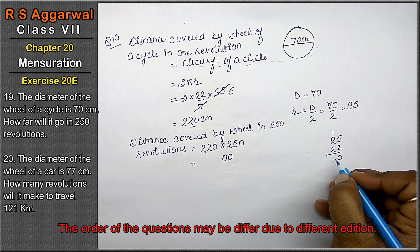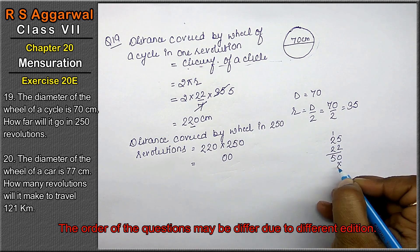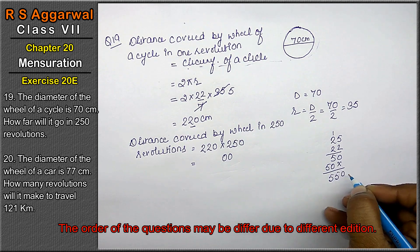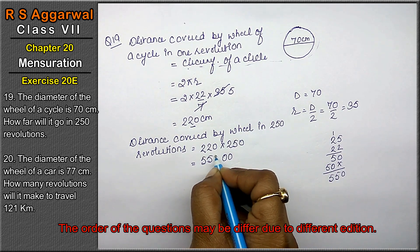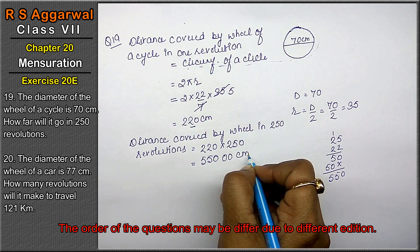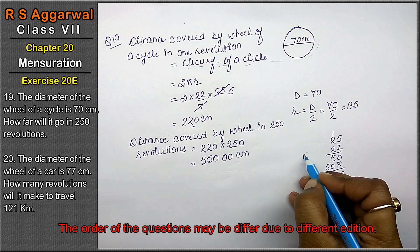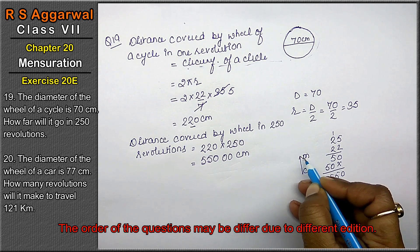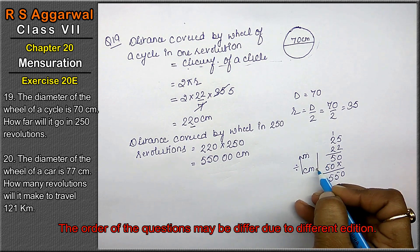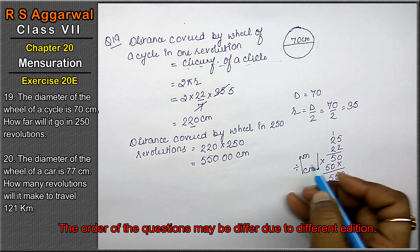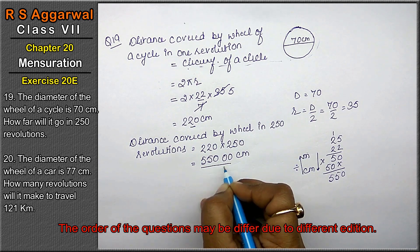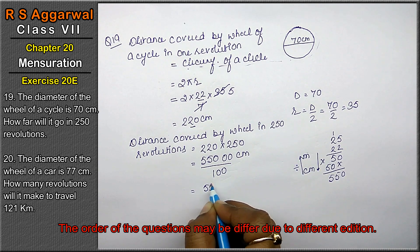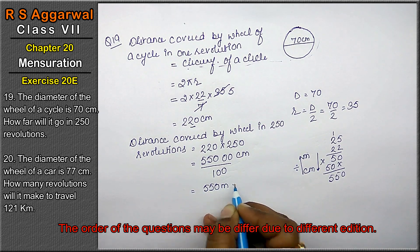25 × 22 = 550. So 250 × 220 = 55,000 cm. Friends, ye cm mein aaya hai. Ab hume isko meter mein convert karna hai. Centimeter se meter jaate hain to divide karte hain, aur meter se cm aate hain to multiply karte hain. To isko meter mein convert karne ke liye divide by 100 kar do. Then the answer will be 550 metres.